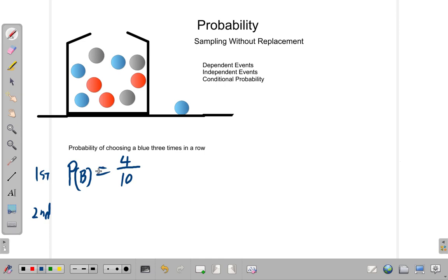So, the probability of a blue on the second pick is three blue marbles in there divided by a total of ten marbles, which is three tenths.